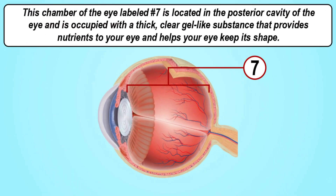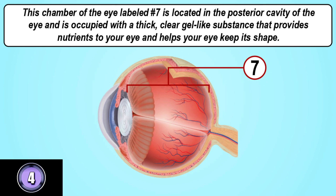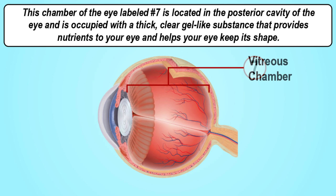This chamber of the eye labeled number seven is located in the posterior cavity of the eye and is occupied with a thick, clear gel-like substance that provides nutrients to your eye and helps your eye keep its shape. The answer is the vitreous chamber.